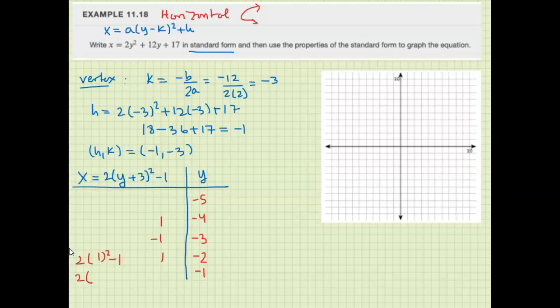Plugging negative 1, we get 2 times 2 squared minus 1. 8 minus 1 gives me 7. And copy that on the other side.